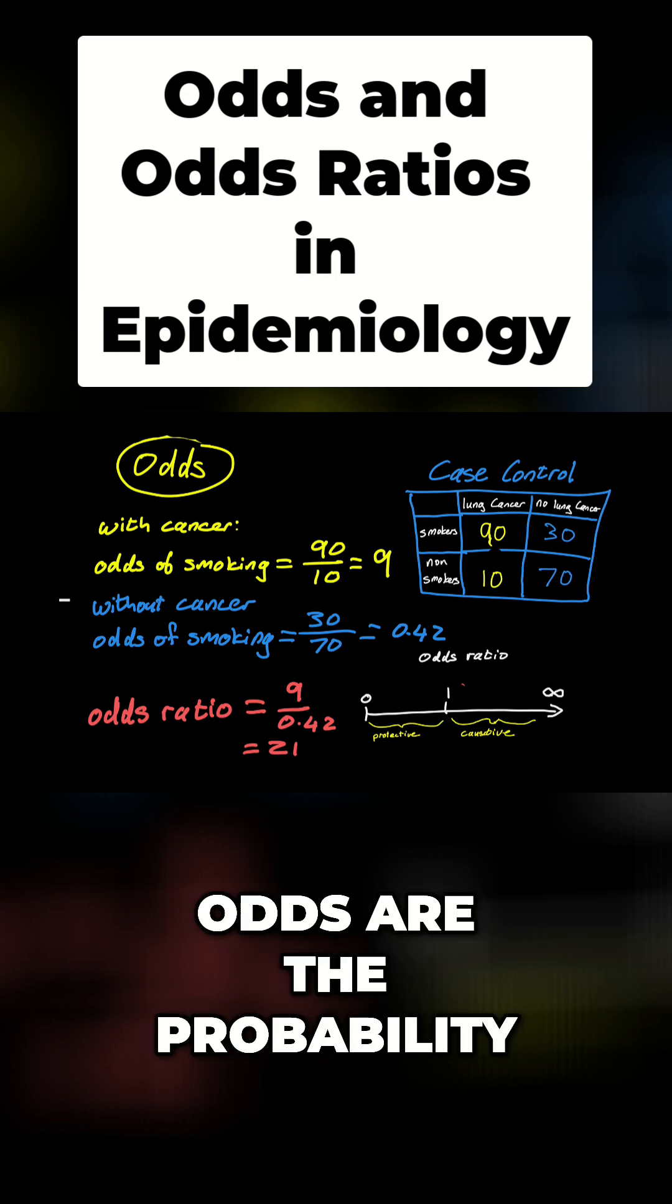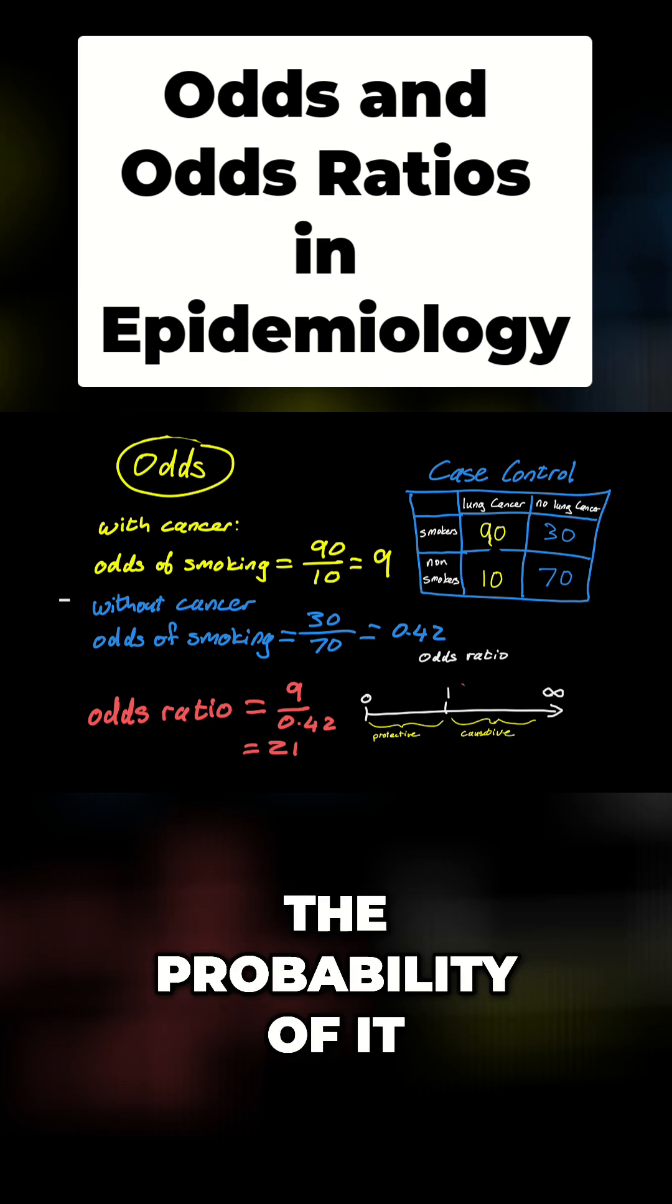Now, what are odds? Odds are the probability of something happening over the probability of it not happening.